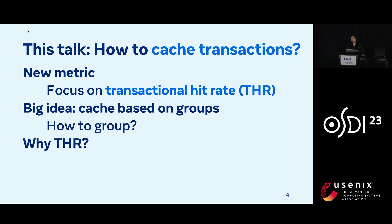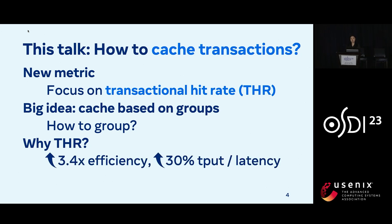Why do we actually care about transactional hit rate? Increases in this metric translate directly into significant performance improvements, both in terms of cache efficiency — which we define as the minimum amount of cache space required to achieve a particular performance, and represents cost savings — as well as improvements in throughput and latency.